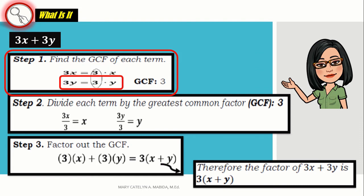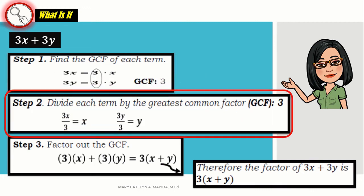And the factors of 3y are 3 and y. And their GCF is? You are correct. It is 3. Now, let's go to step number 2. Divide each term by the greatest common factor. And our greatest common factor is 3. 3x divided by 3 is x. And 3y divided by 3 is y.